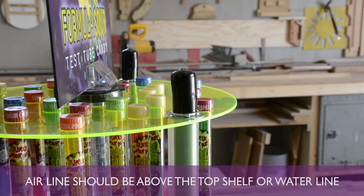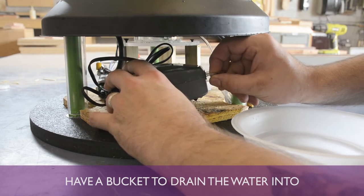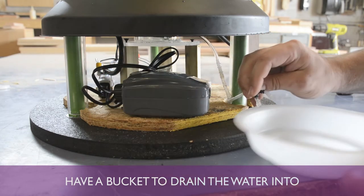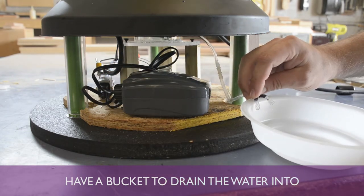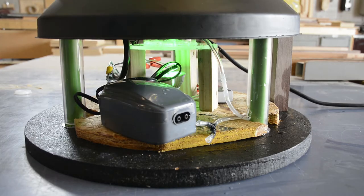Once the air line is in place, you'll need to clear any water from the pump. Grab a bucket and remove the air lines from the pump. While the water is draining from the air lines, plug in the display and turn it on to get any water out of the pump.